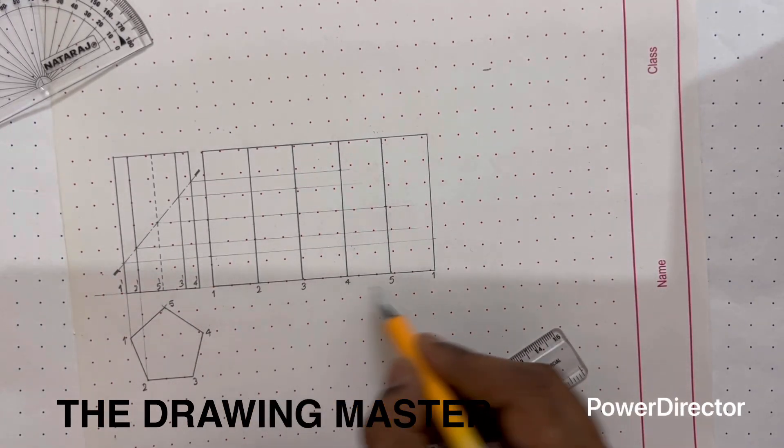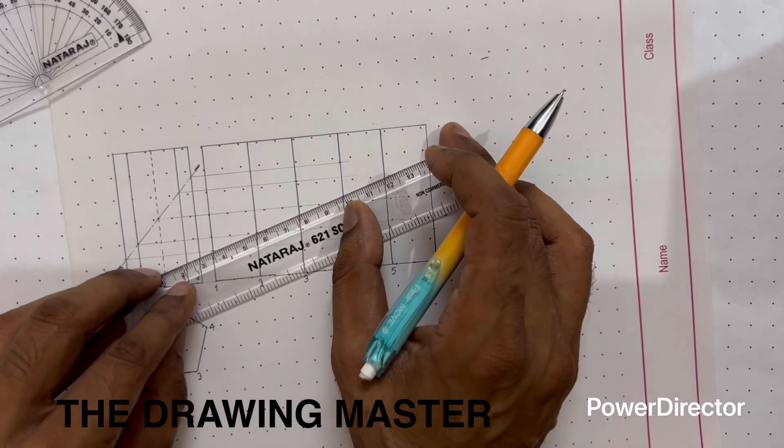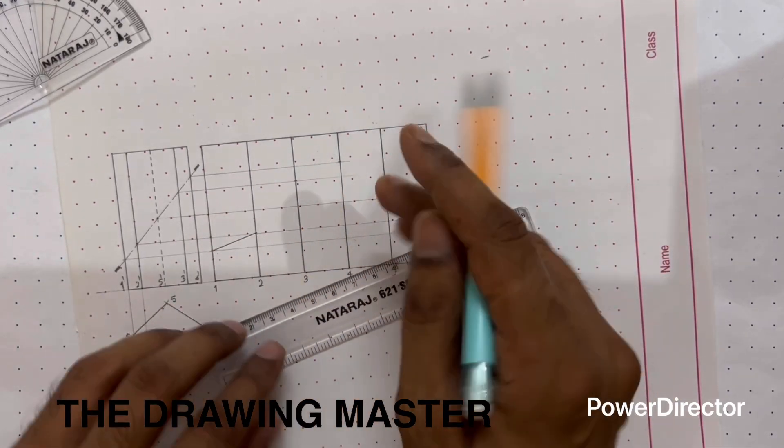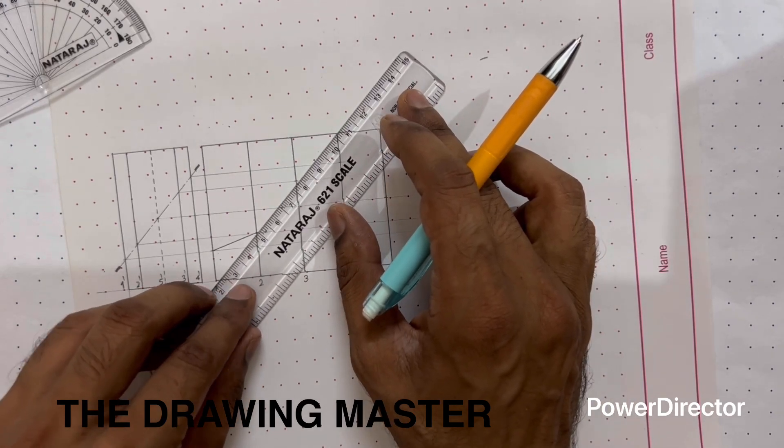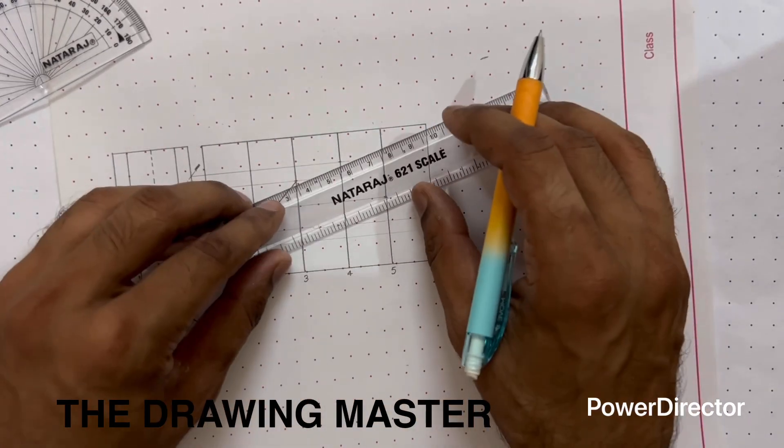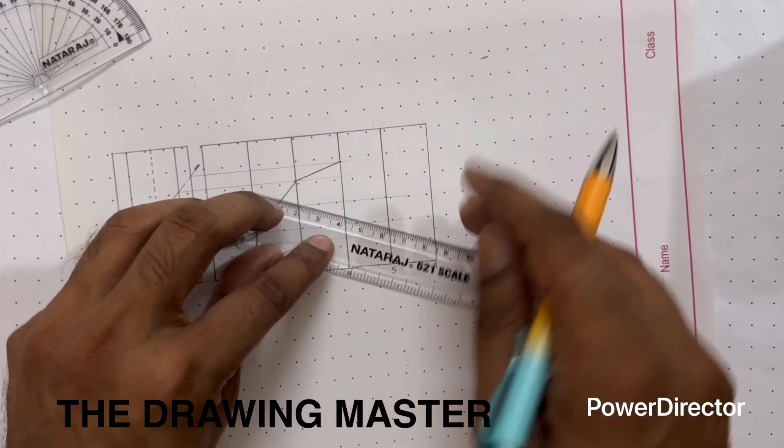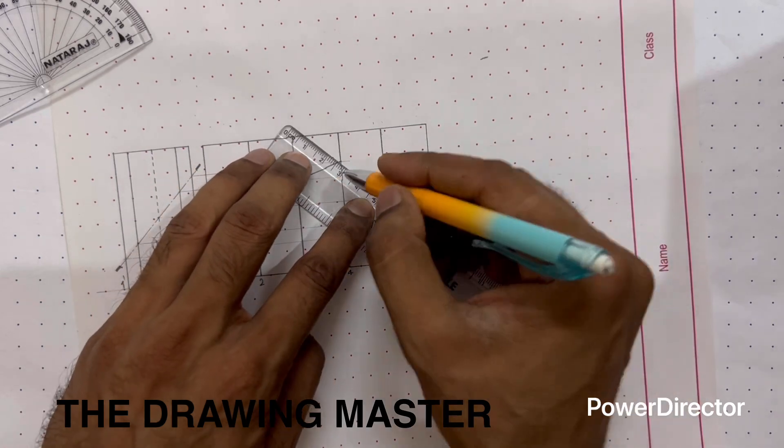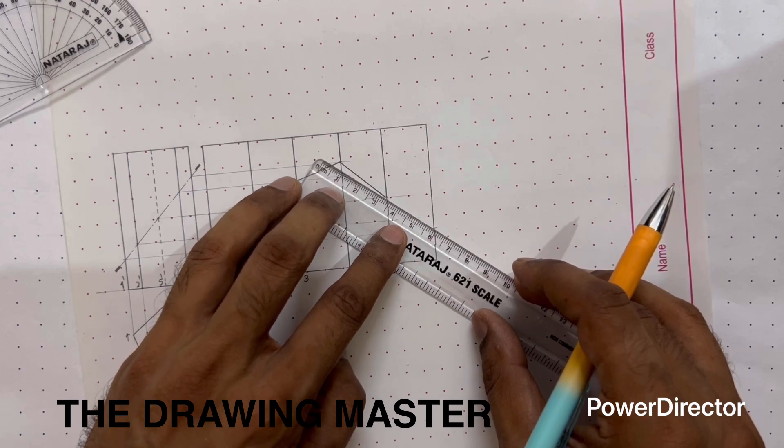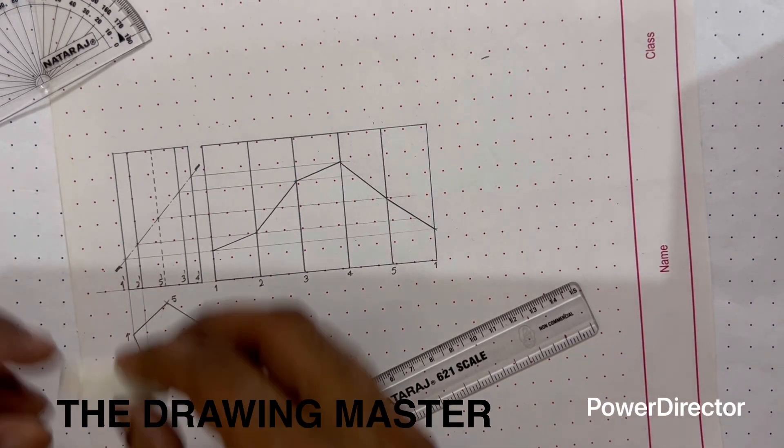So one thing is very clear, without this labeling you cannot transfer the points. So this is 1 and 2, let's join this. 1, 2 then 2, 3. Then this is 1. Then this is 2, 3, 4. Then this is 2, 3, 4. Now this is the developed surface of the truncated part.